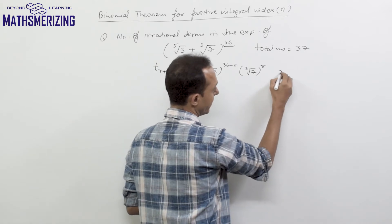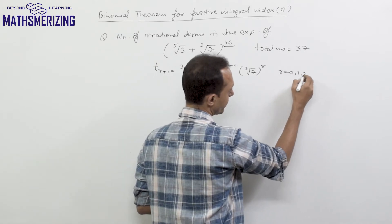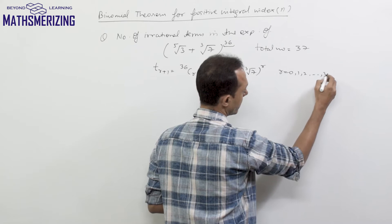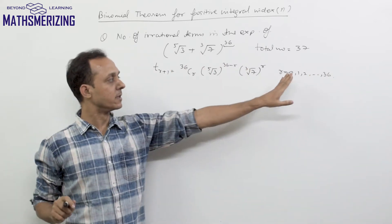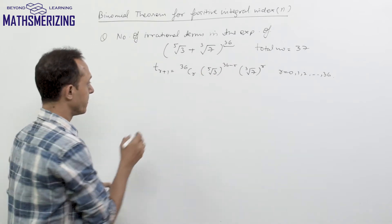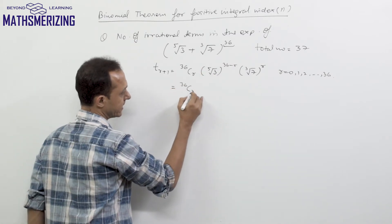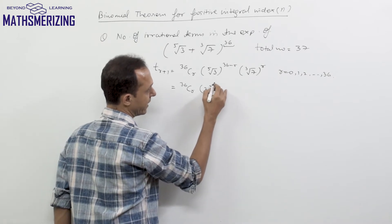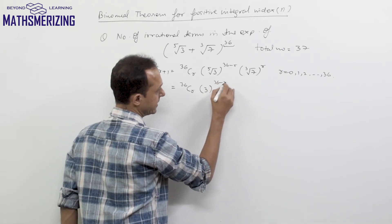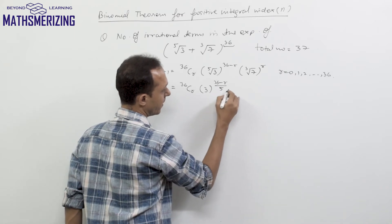where the value of r varies from 0 to 36, so I will take altogether 37 values. So I will simplify it a bit so I will write it as 36Cr 3 to the power 1 by 5, so I can write it as 36 minus r upon 5, 7 to the power r by 3.